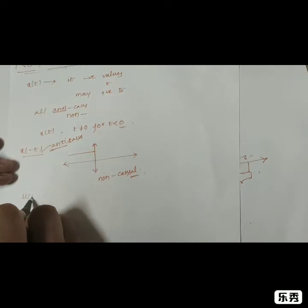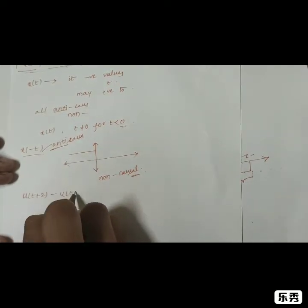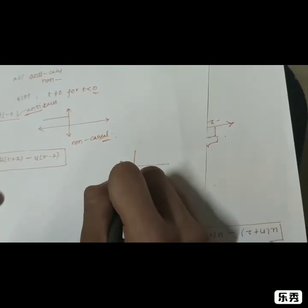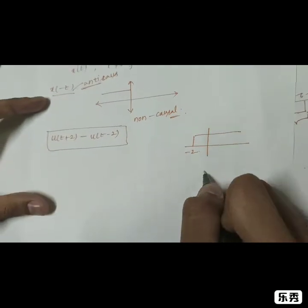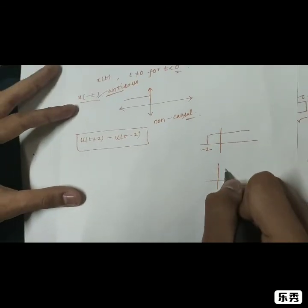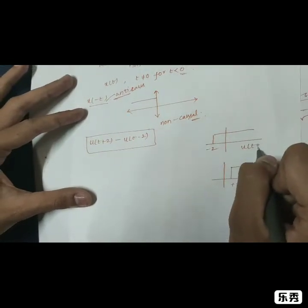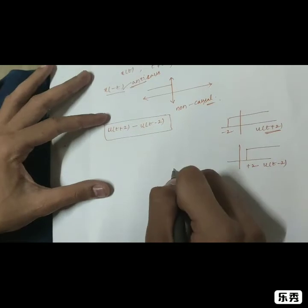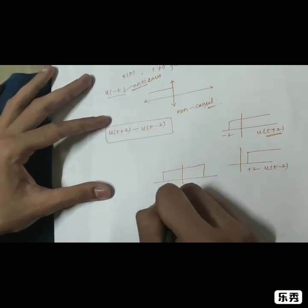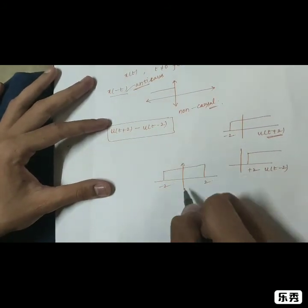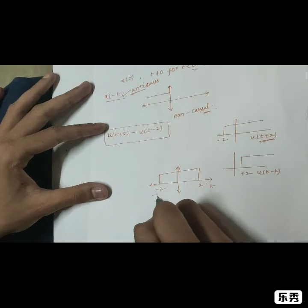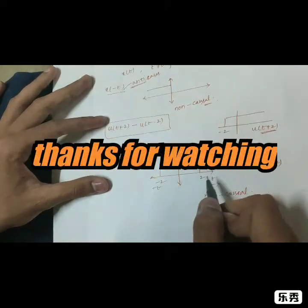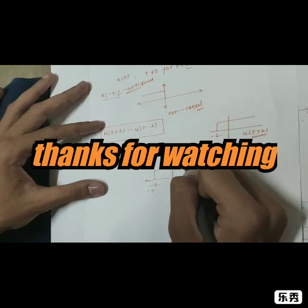Let's take one more example: u(t+2) minus u(t-2). The function u(t+2) ranges from minus 2 to 2, so it exists for both negative and positive values of t. Therefore, it is a non-causal signal. However, it cannot be anti-causal since it also exists for positive values of t.